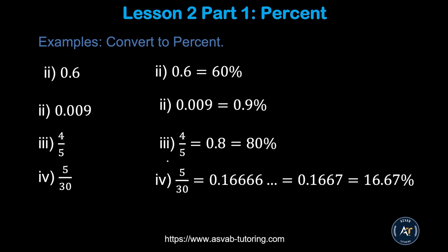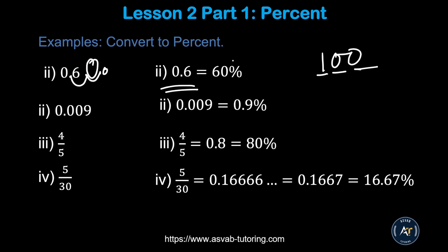Now, how to convert from decimal to percent — you do the opposite. Move two decimal places from left to right, which means you are multiplying by 100. After 1 in 100, there are two digits, so you move two decimal places left to right. If you don't have enough digits, fill with zeros. So 0.6 means 60 percent, and 0.9 means 90 percent.